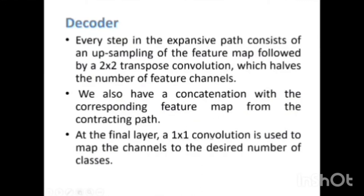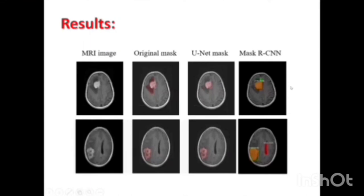For a given MRI image with the original mask, the U-Net output and the Mask RCNN output are as shown. The U-Net model outputs are more accurate than the Mask RCNN output. For some images, the Mask RCNN output predicted incorrectly, and for some MRI images it does not predict the tumor at all.